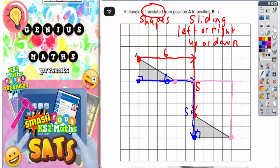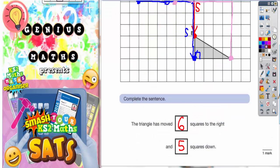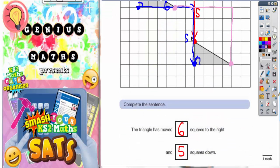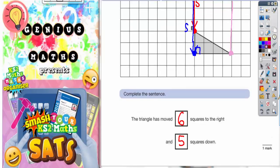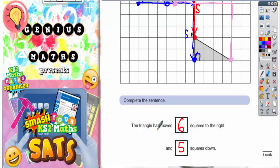Therefore, that method works. Doesn't matter which pair of corresponding corners you choose, as long as the pair of corners is in the same position on both shapes. The final answer is, the triangle has moved 6 squares to the right and 5 squares down.